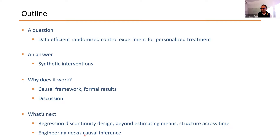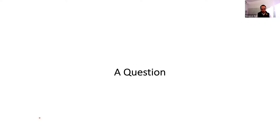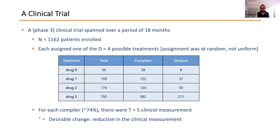Let's get to the simple question. This work is done in collaboration with a pharmaceutical company — currently anonymous, hopefully we'll put out the manuscript soon. We utilized phase three clinical trial data collected over 18 months. In this clinical trial, there were 1,162 patients. Each patient was given one of four drugs — let's call them drugs zero, one, two, and three. Patients were assigned at random, but not uniformly.